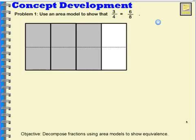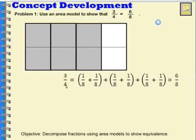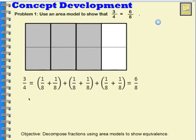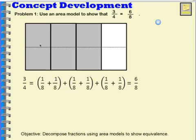Let's do some addition sentences to show that equivalence. 3 fourths, that's what I had before, is equal to 1 eighth plus 1 eighth plus 1 eighth plus 1 eighth plus 1 eighth plus 1 eighth, which is equal to 6 eighths.